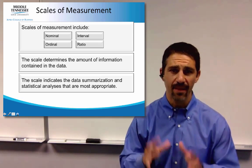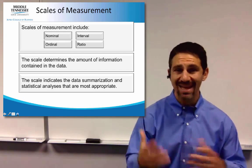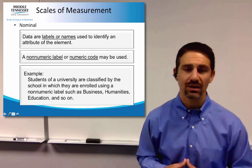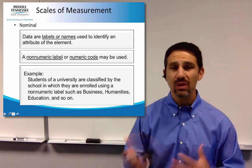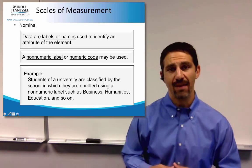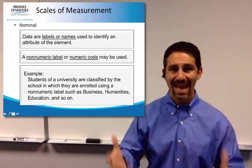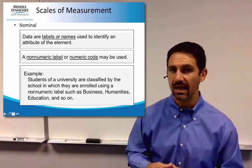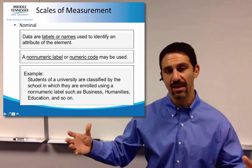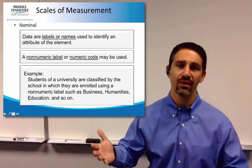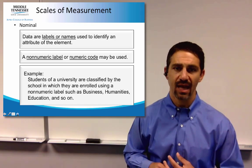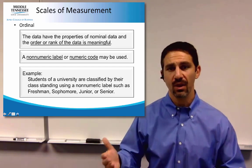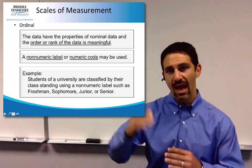Nominal is nothing more than categorical data — when you label something. For example, what's your major? Your major could be economics, another person's could be finance. That's data. Nominal data is when you can categorize something but there's no difference in rank between the categories — not one is higher than the other. It could be color, shirt color, or again, major is an example.